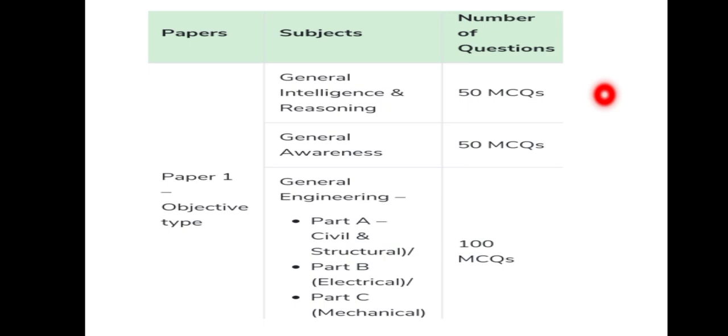Paper 1 is objective type — MCQs. Looking at the sections: General Intelligence and Reasoning is 50 MCQs for 50 marks. There are three parts: Part A is Civil and Structural questions, Part B is Electrical Engineering, Part C is Mechanical Engineering. Part B contains 100 MCQs for 100 marks.